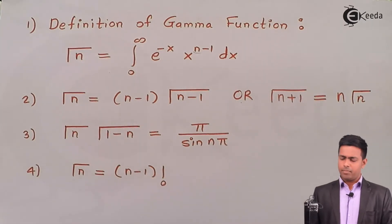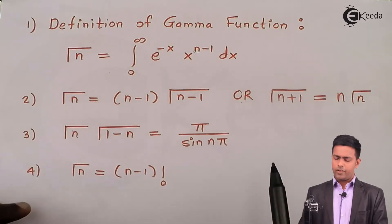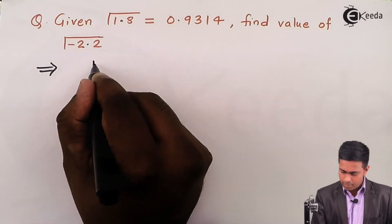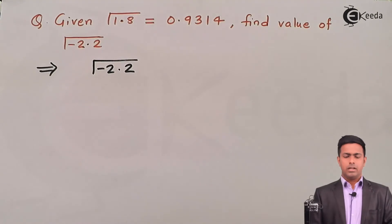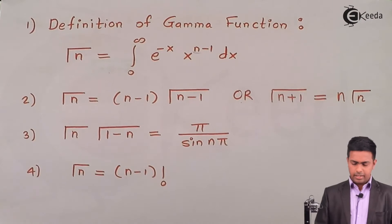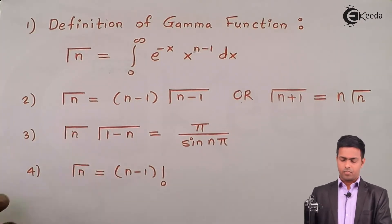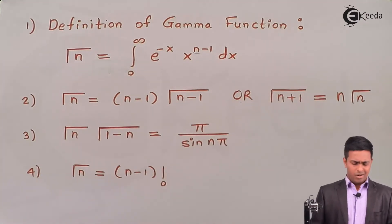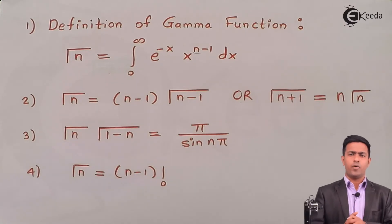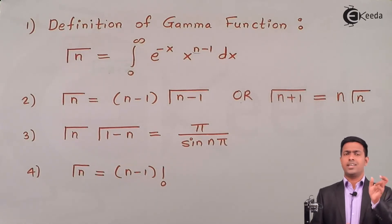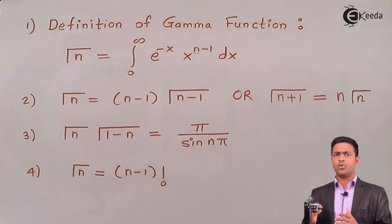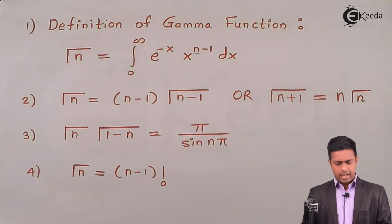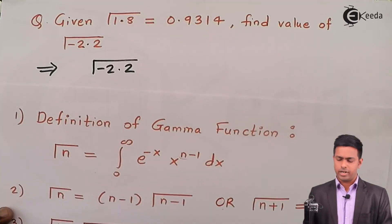To solve this problem we will use property number 2. If we apply it directly with n = -2.2, we get (-2.2 - 1) = -3.2, giving us gamma(-3.2) — but this is not going to lead us to the answer. We would keep switching from -2.2 to -3.2, then -4.2, -5.2, going further into the negative side. To get the answer, we need to come to the positive side, where the given value gamma(1.8) is available.